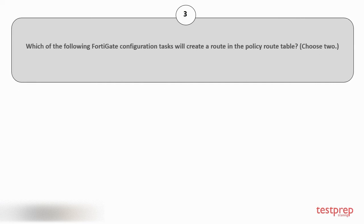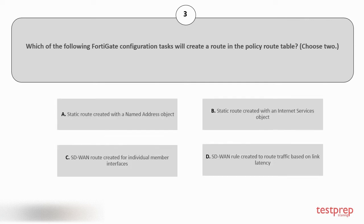Question number 3. Which of the following FortiGate configuration tasks will create a route in the policy route table? Choose 2. Your options are: A) static route created with a named address object; B) static route created with an internet services object; C) SD-WAN route created for individual member interfaces; D) SD-WAN rule created to route traffic based on link latency.